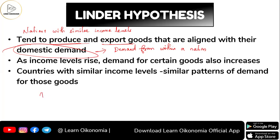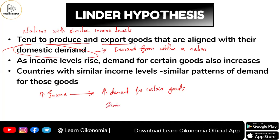So what happens when income increases? When income increases, it will definitely have its reflection on demand as well — demand for certain goods would increase. So nations with similar income levels would have a similar pattern of demand for such commodities. So again, you are having some similarity element driving a similar pattern when it comes to trade relations, and that is why they engage in trade with each other.